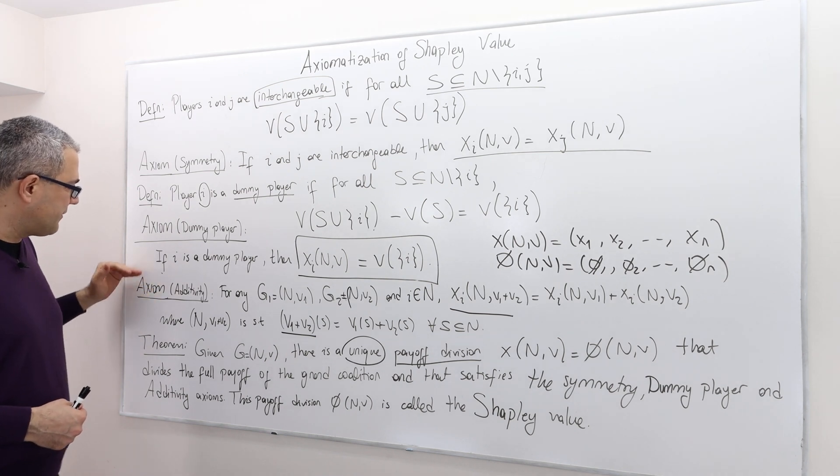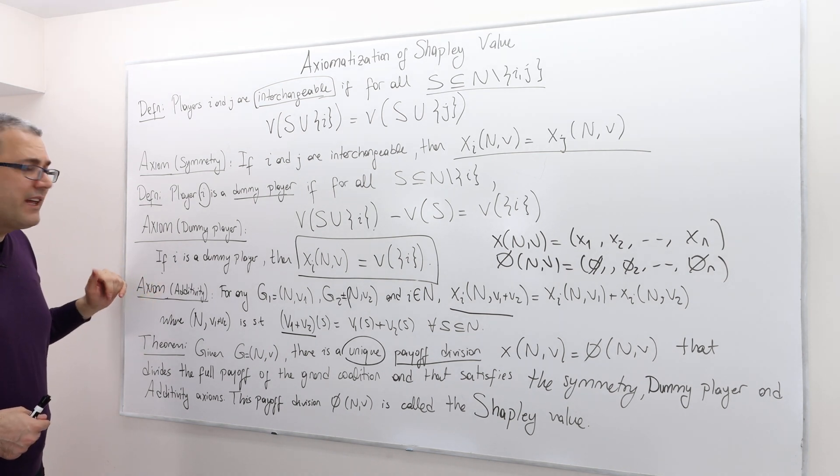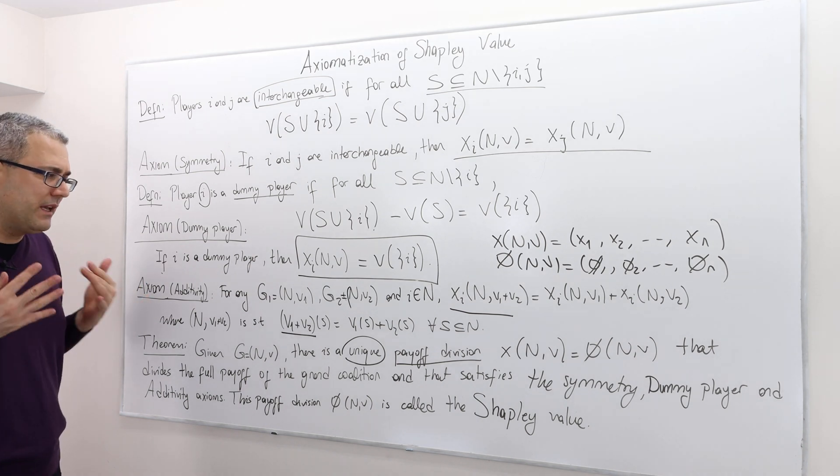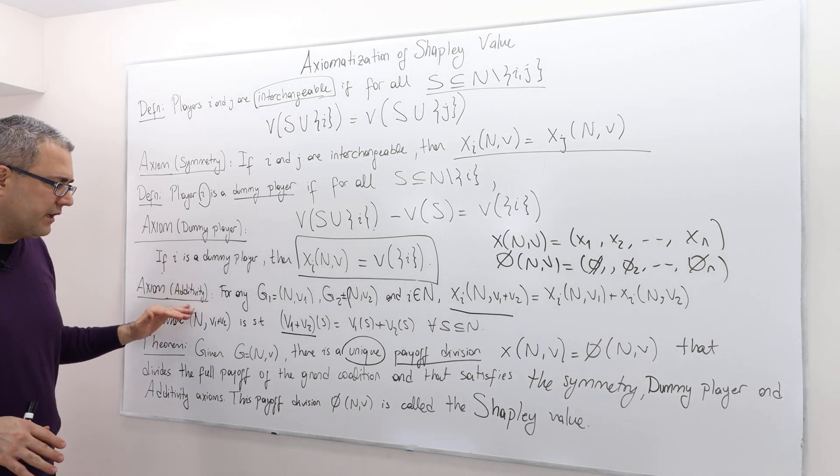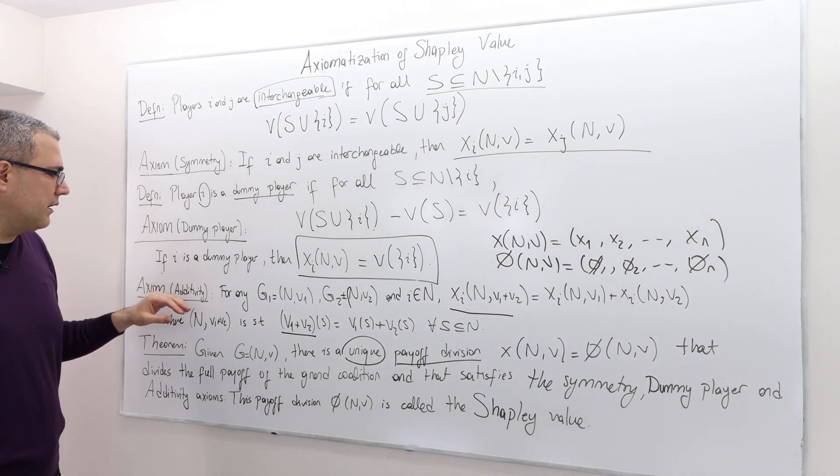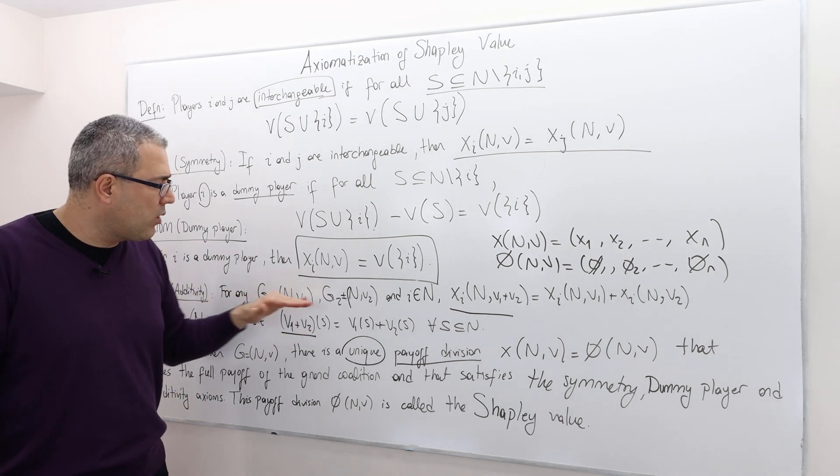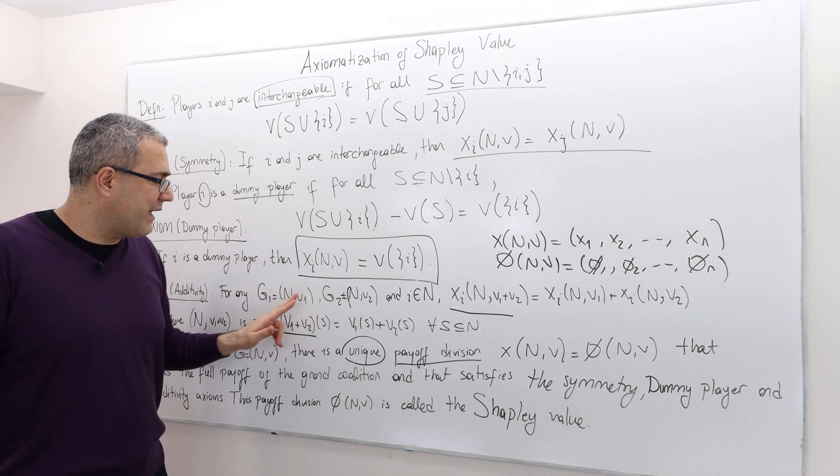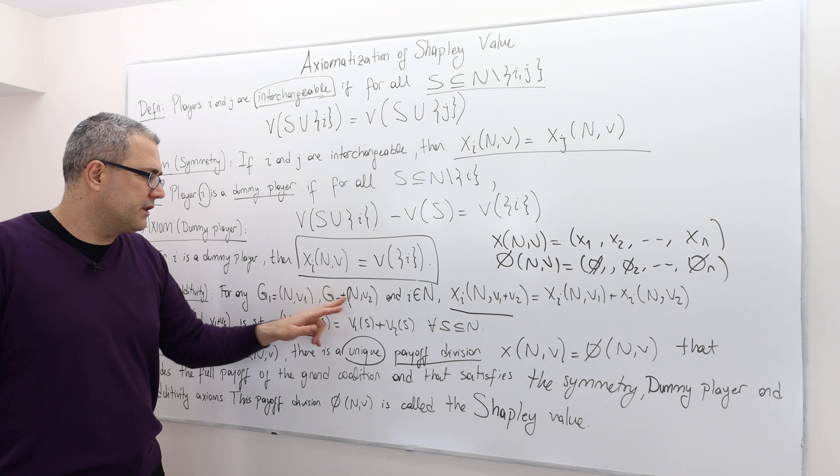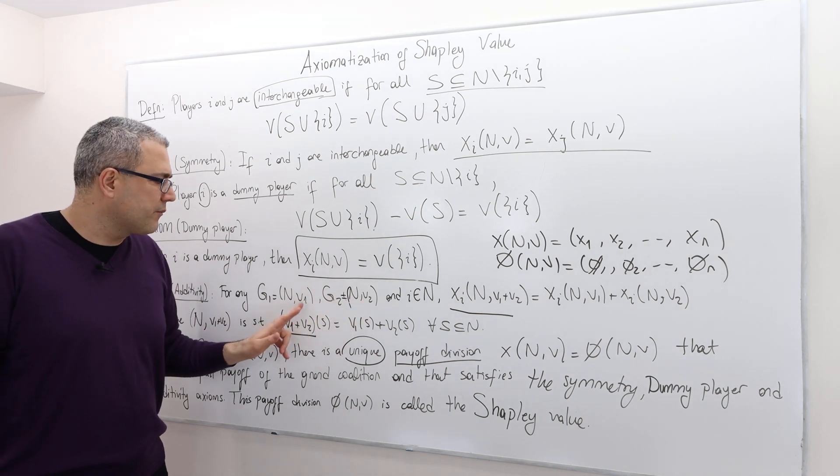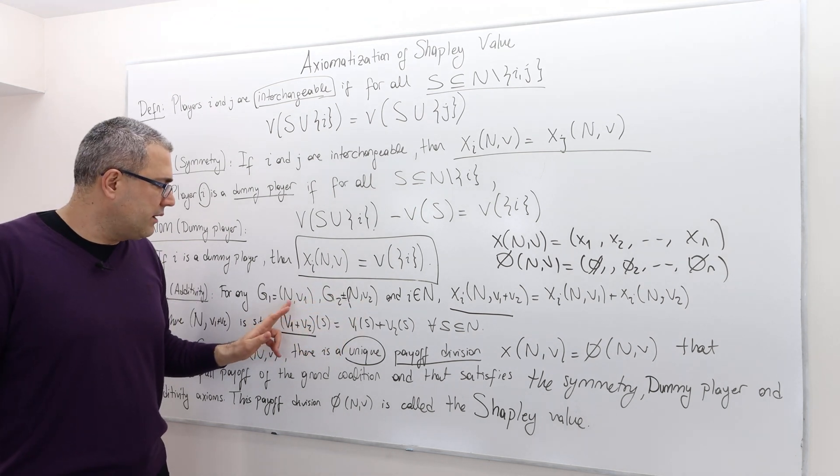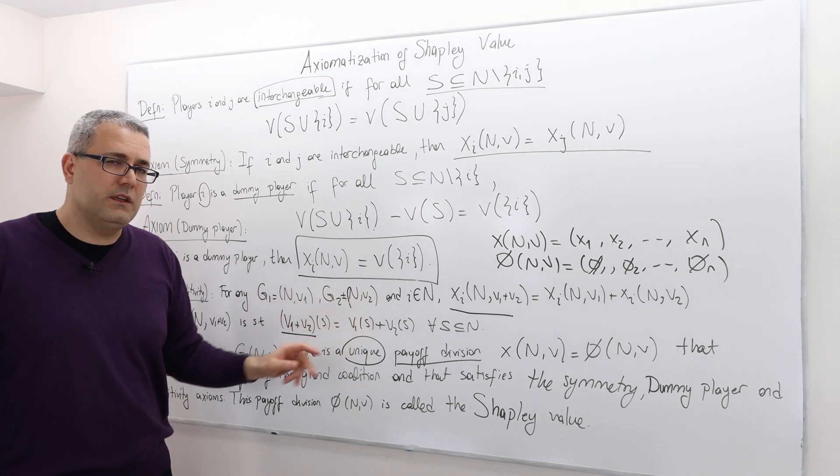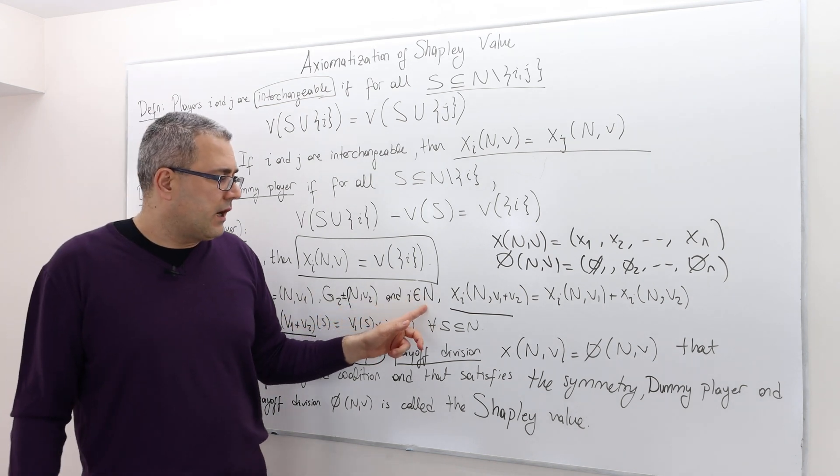Okay. Next, additivity. That's a technical assumption, but still there is an intuition behind it. I think it makes sense. Let me first read it and then talk about the intuition. So for any two games, G1 and G2, important thing, both games have exactly the same set of players. The only thing that differs is the worth function. On one, we have the worth function v1. On the other, we have the worth function v2.